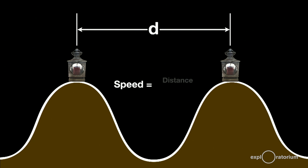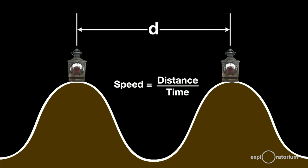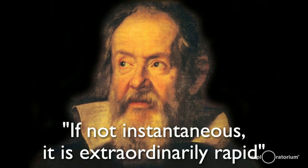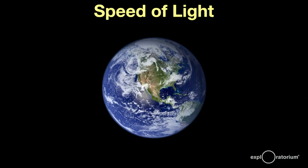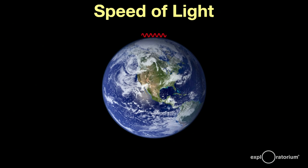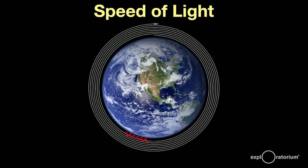If he knew the time and the distance, he could figure out the speed of light. He had no idea how fast light traveled or that his experiment was doomed to failure, but only because he lacked the technology. Galileo concluded that if not instantaneous, it is extraordinarily rapid — and that is a valid scientific statement. Galileo failed because the speed of light is so unbelievably fast.